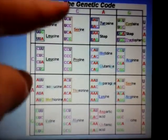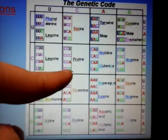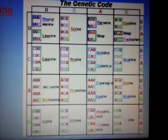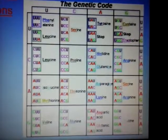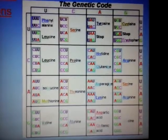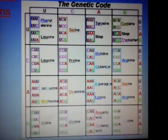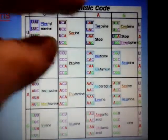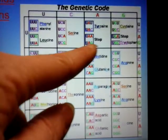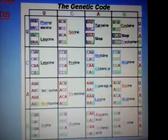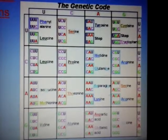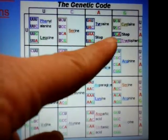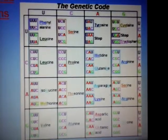Some amino acids have four or more codons that code for them. The first two letters in the sequence are most important — often you can switch the last letter and it doesn't change the amino acid. For example, CCU, CCC, CCA, and CCG all mean proline. Three codons — UAA, UAG, and UGA — are stop codons. Like a period at the end of a sentence, they tell the ribosome the protein is finished.